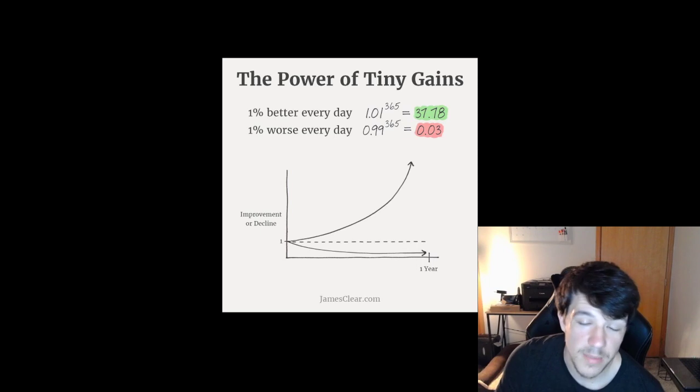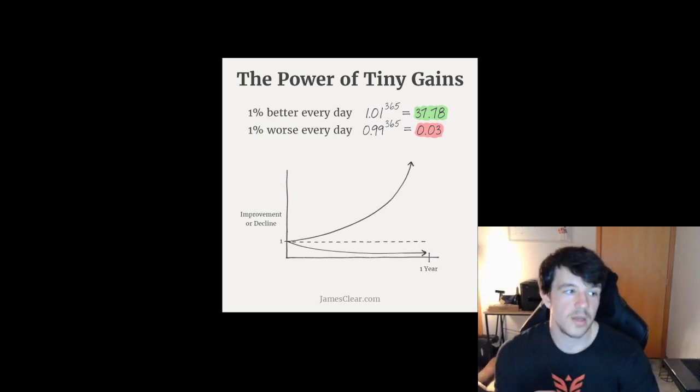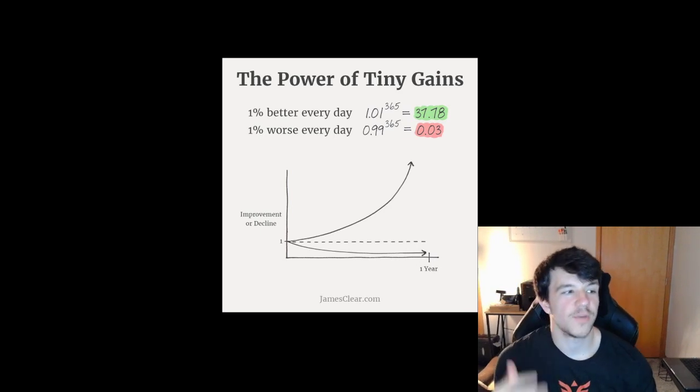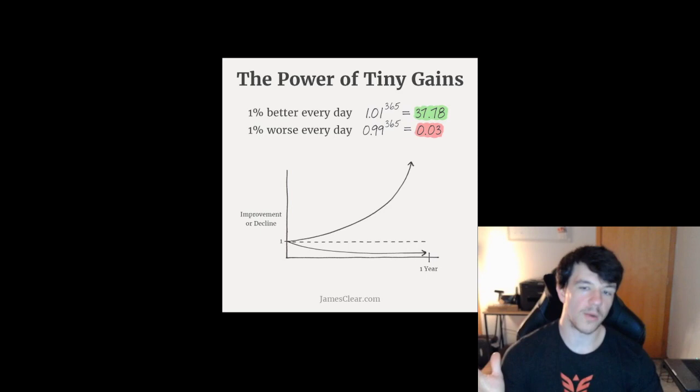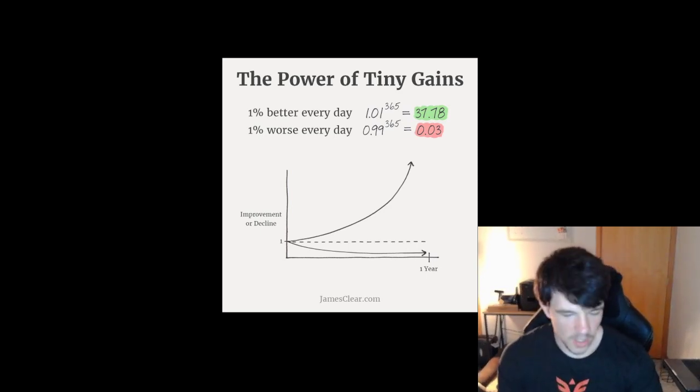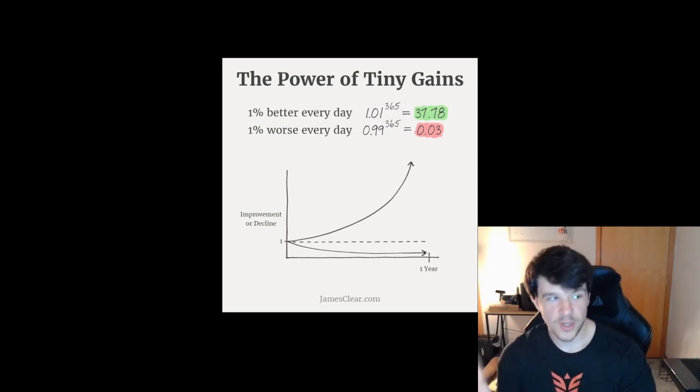Instead of maybe doing PortSwigger labs an hour a day, maybe you do them an hour and a half a day or even an hour and five minutes a day. Because we're looking for a 1%, you don't have to say 'I'm going to improve my quantity, so I'm going from an hour to four hours.' No, you can be like 'okay, this next week I did them for an hour a day last week, this week I'm going to do it for an hour and five minutes.'